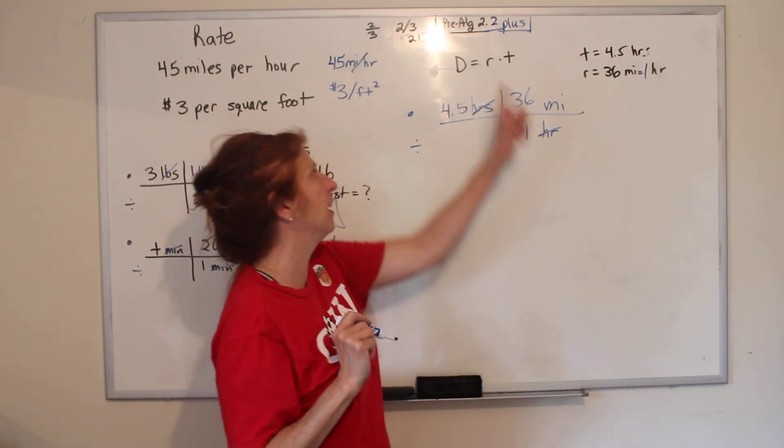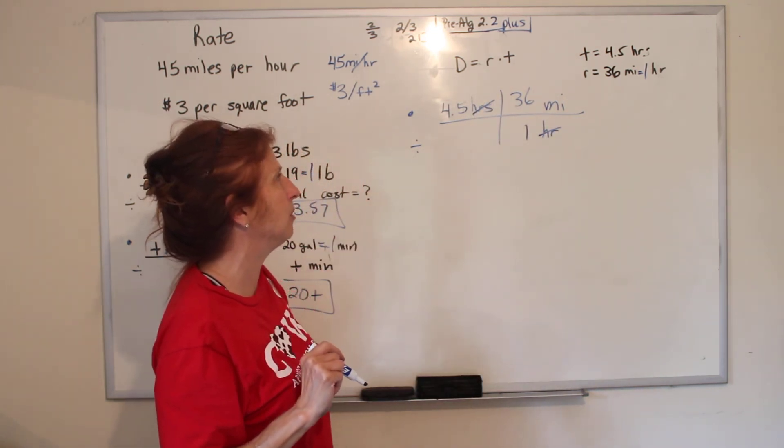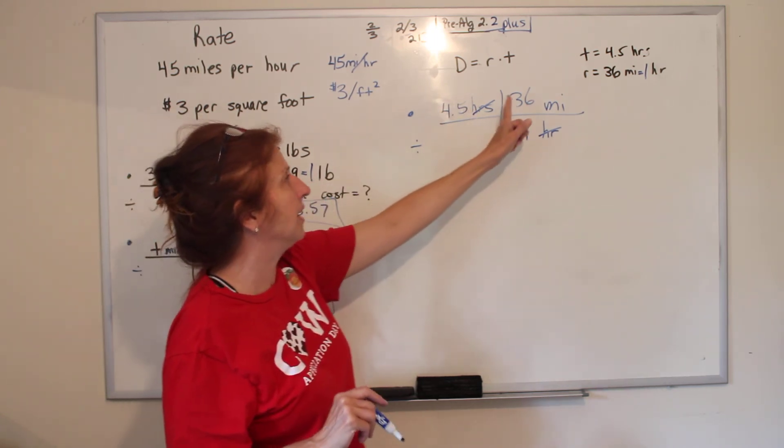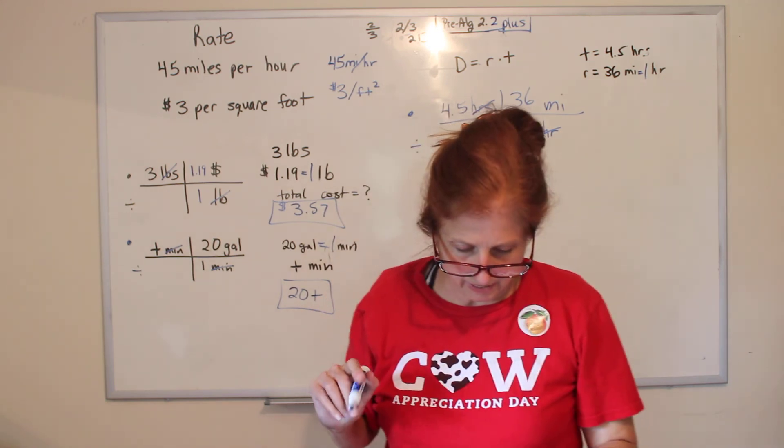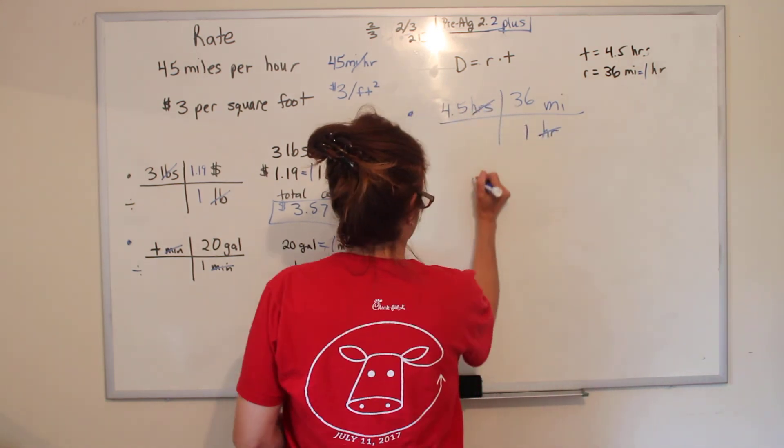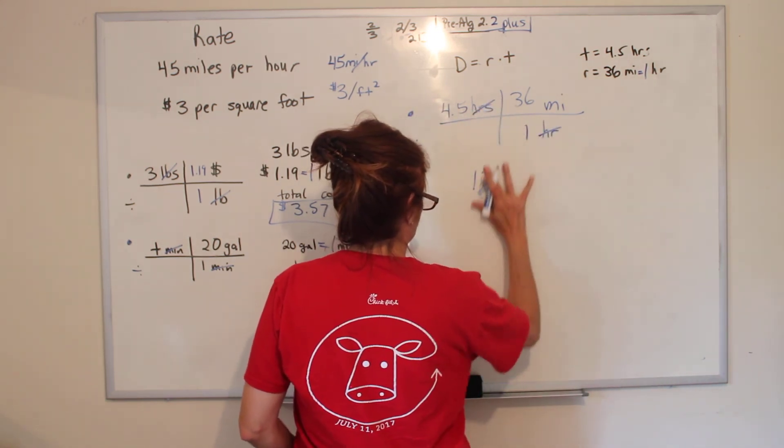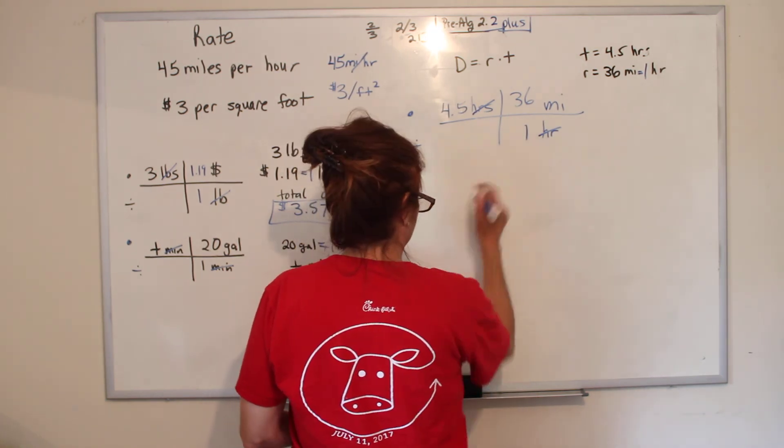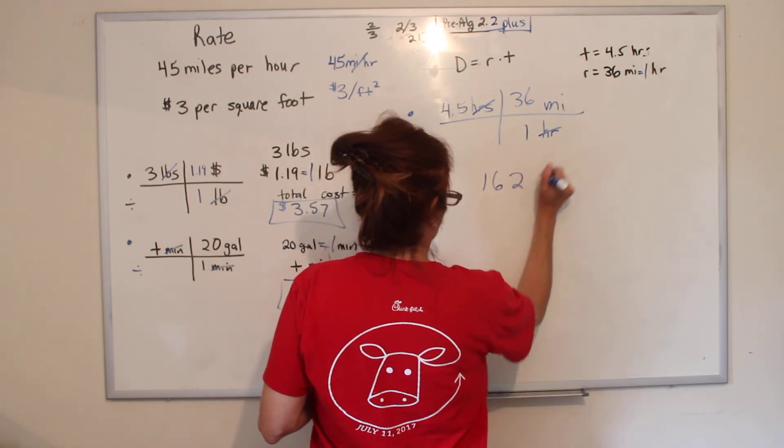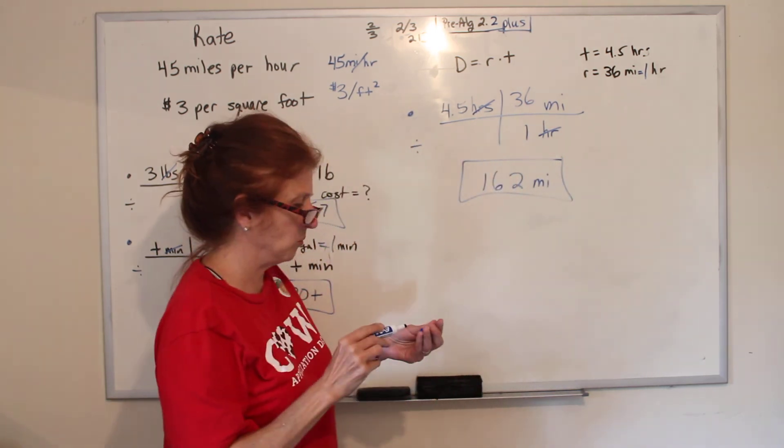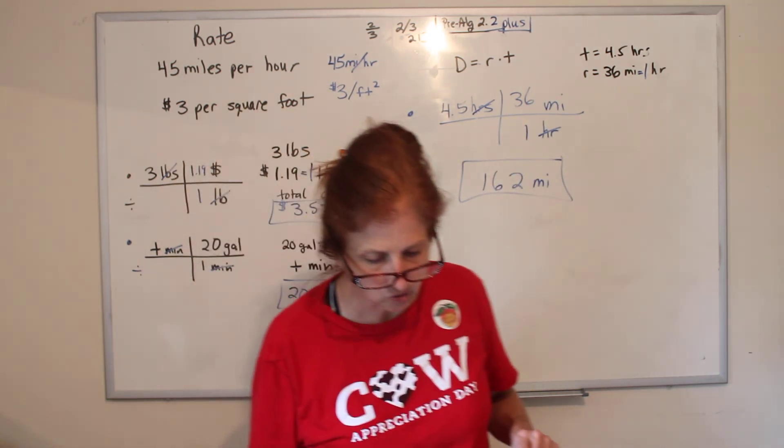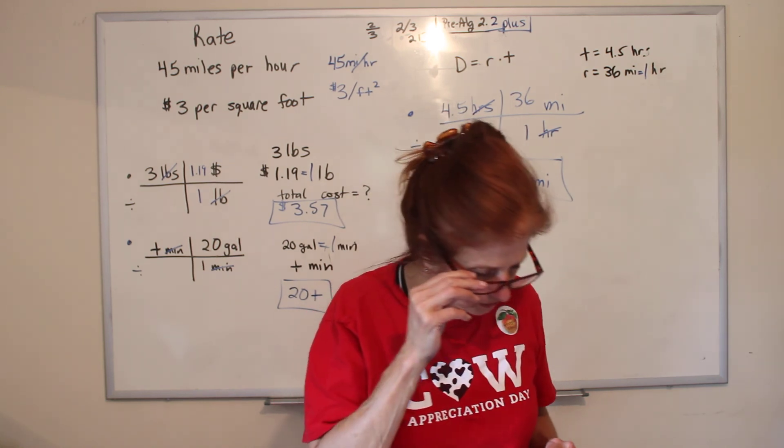So we do 4.5 times 36 divided by one, and it is 162. And I'm writing it backwards. Let's try again. 162 miles will be how far we will go in 4.5 hours on our ocean liner.